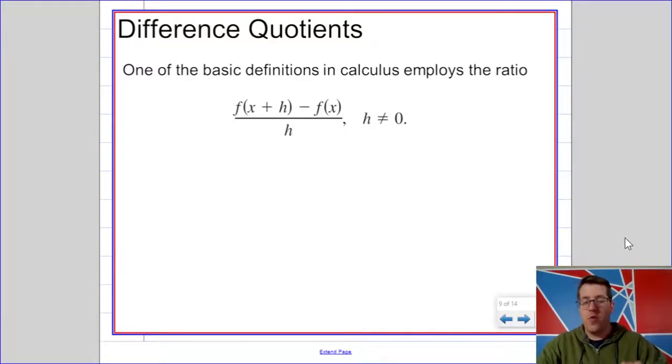So the difference quotient is found by subtracting two different outputs. One where the function is evaluated at x plus h, and one where the function is evaluated at x, and then dividing, hence the quotient, by h. Now, since h is in the denominator, h can't be zero.